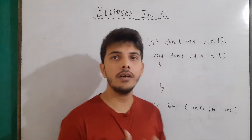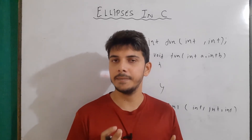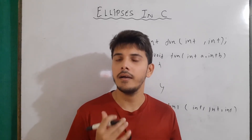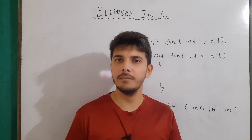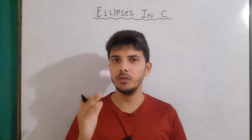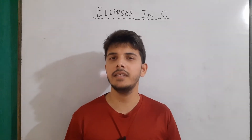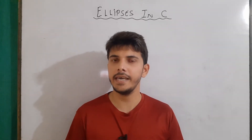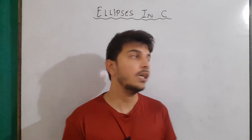Instead of using this, we use ellipses, or a function with a variable number of arguments. To use ellipses, we have to use three macros defined in the stdarg.h header file.